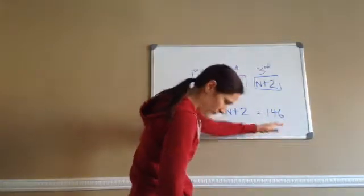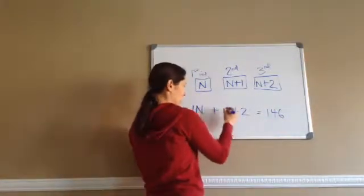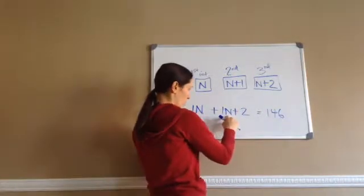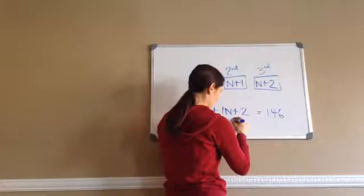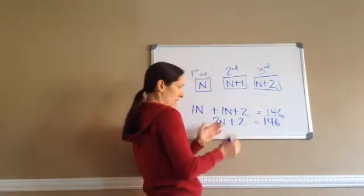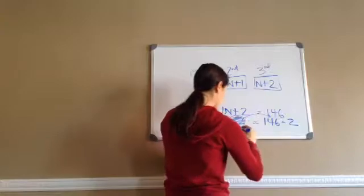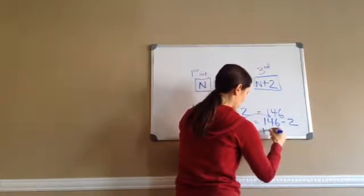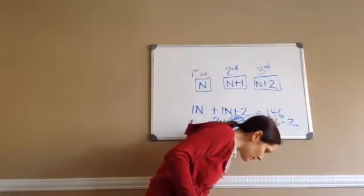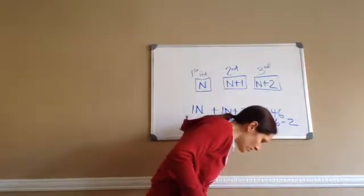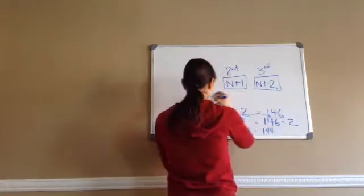Now we've come up with a problem to try to figure out what n is. I always like to put ones with my letters. So one n plus another one n makes two n — it's kind of like one dog plus one dog equals two dogs. I just bring everything else down. Now I'm trying to get this plus 2 out of the way, so I'm going to make it minus 2. So now I'll get 2n equals 146 minus 2, which would be 144. Two times what equals 144? Two times 72. So n equals 72.